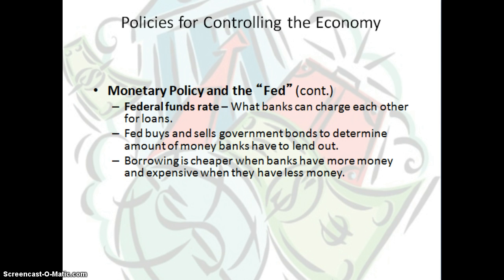Under monetary policy, there is the federal funds rate, which is what banks are able to charge one another for loans. Banks do loan each other money. The Fed also buys and sells government bonds to determine the amount of money that banks have to lend out. Borrowing is much cheaper when banks have more money and more expensive when they have less.